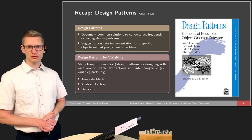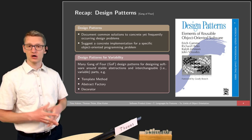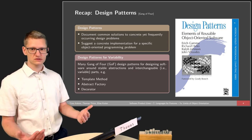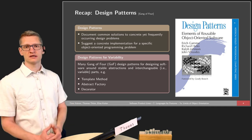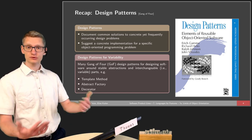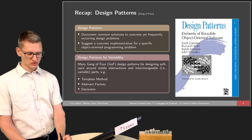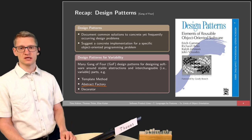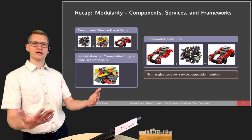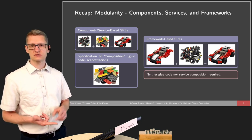We talked about design patterns in general but also with a special focus on variability — how can we design systems in a way that variability is supported, so that we pre-plan certain extensions for the future. For instance, if we want to extend the way objects of a certain kind are created, we can use the abstract factory pattern to make the creation of objects exchangeable. We also looked at modularity on a higher level in the last lecture when we looked at components, services, and frameworks.